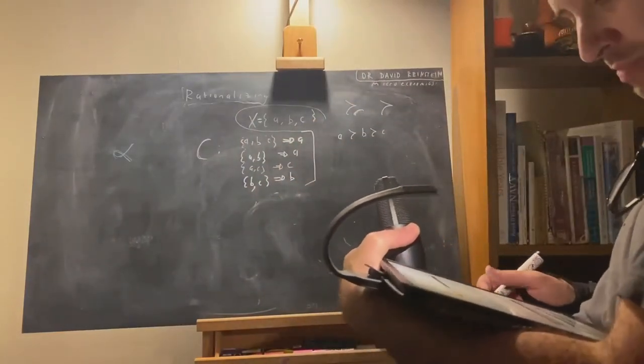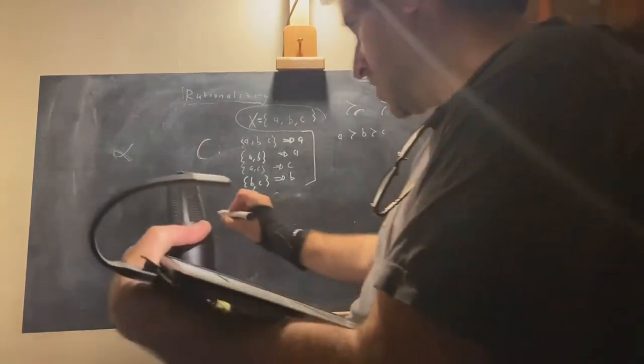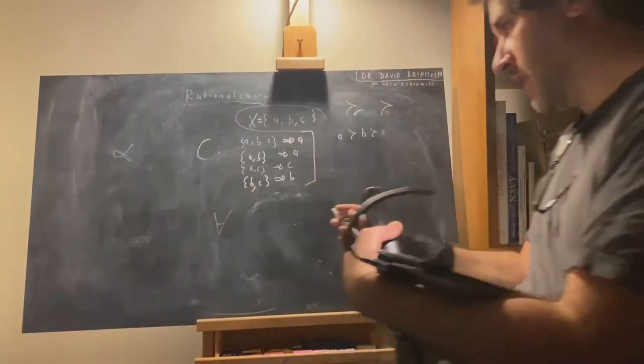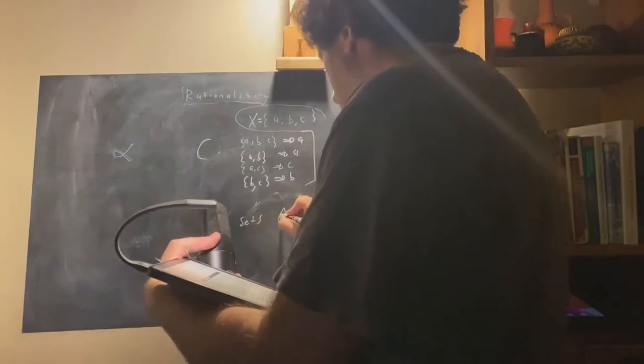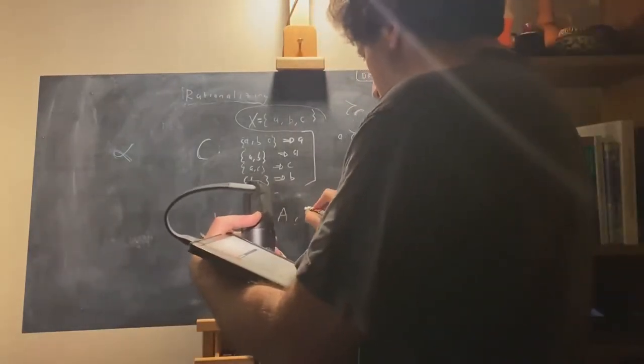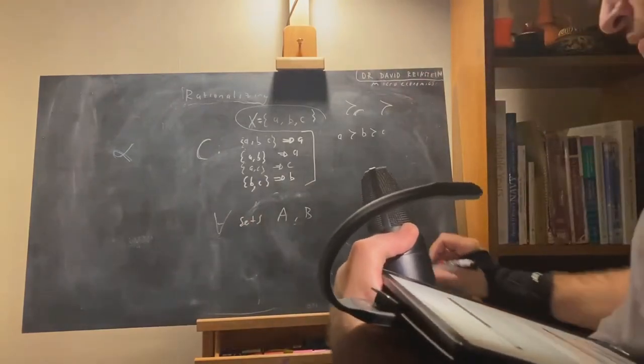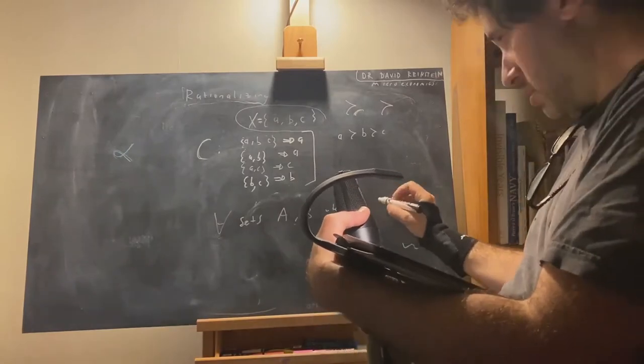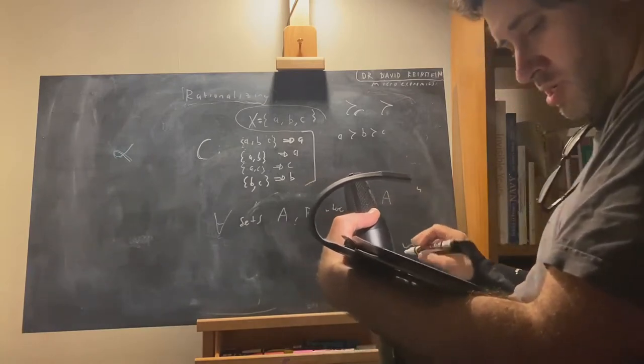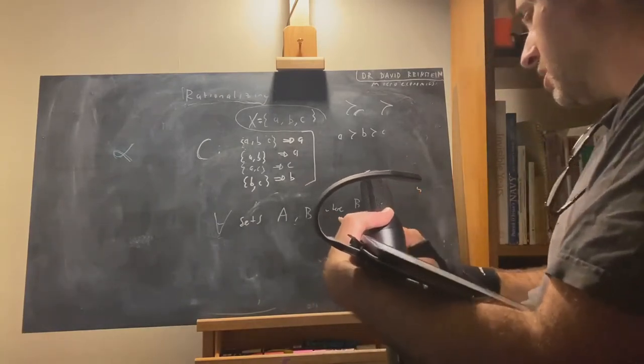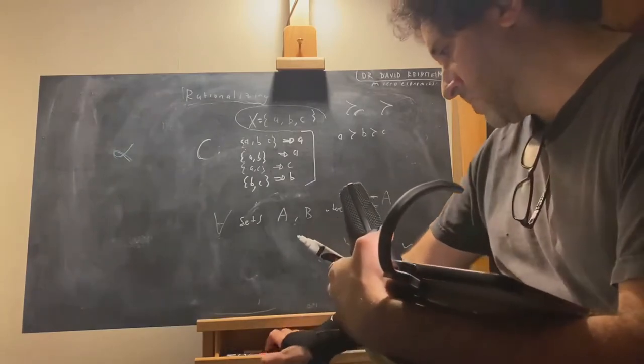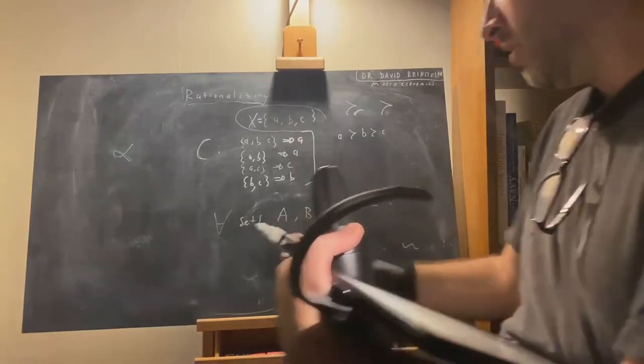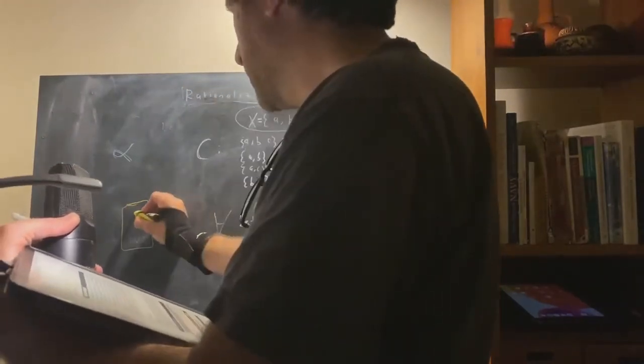That choice function satisfies property alpha if, for all sets - that's upside down A, for all - for all finite sets A and B, where B is strictly within A. This choice stuff comes out of set theory. What does it mean B is strictly within A?